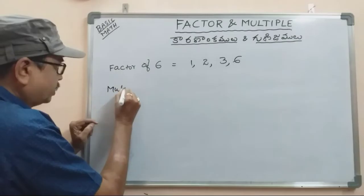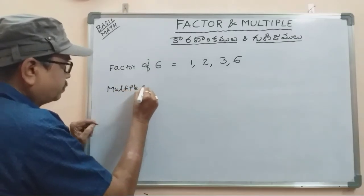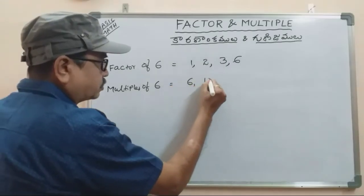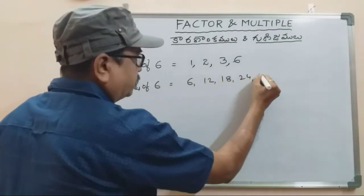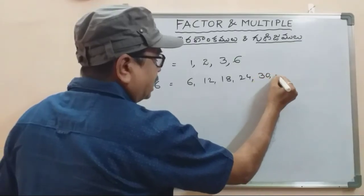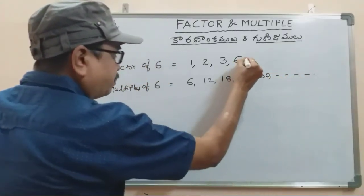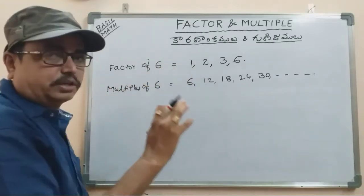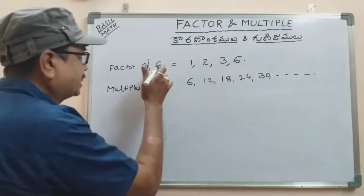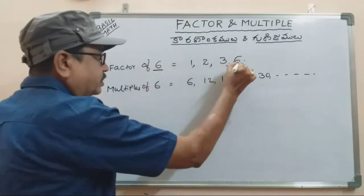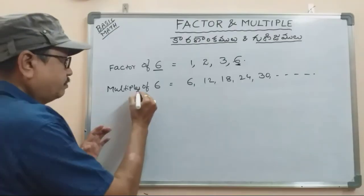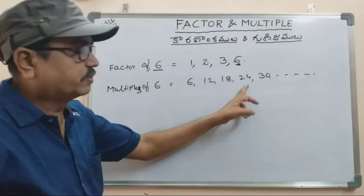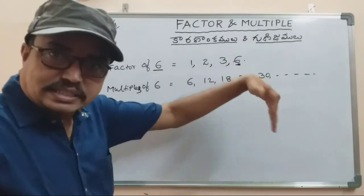Multiples of 6: 6 times 1 is 6, 6 times 2 is 12, 6 times 3 is 18, 6 times 4 is 24, 6 times 5 is 30, 6 times 6 is 36, and so on.